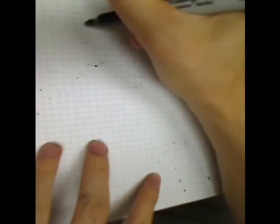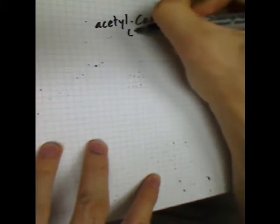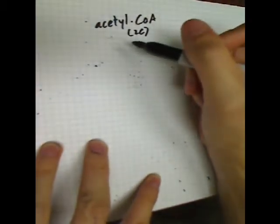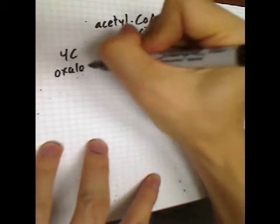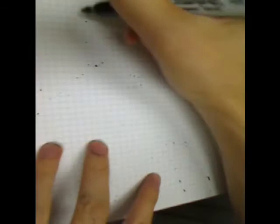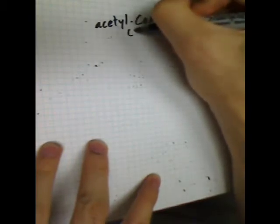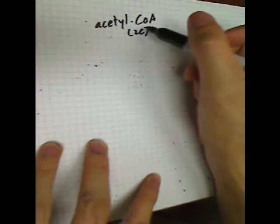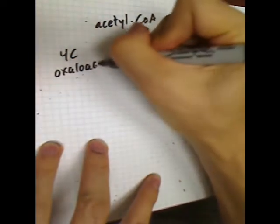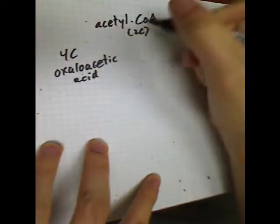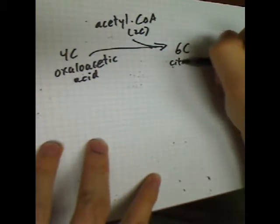What's going to happen in the Krebs cycle is that we start with this acetyl-CoA, which has two carbons. There's going to be an enzyme that grabs that acetyl-CoA and also grabs a four-carbon compound called oxaloacetic acid and joins them together to form a six-carbon compound called citric acid.